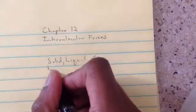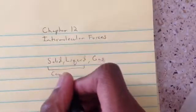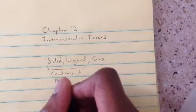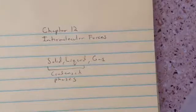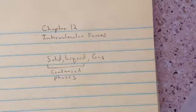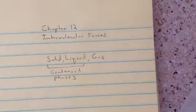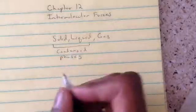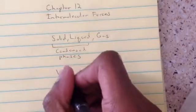Solid and liquid are called condensed phases. They're called condensed phases because the molecules and atoms are so close to each other that they can actually interact, and the forces between them become significant — they stick together more. Gas particles are so far away that the forces don't have any impact, so they don't really interact with each other. There are three types of main forces that cause these phases, and they're called Van der Waals forces.